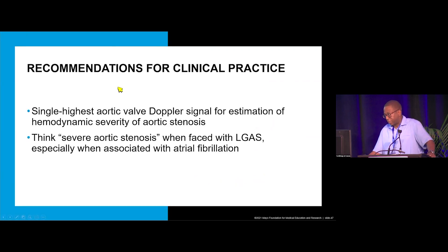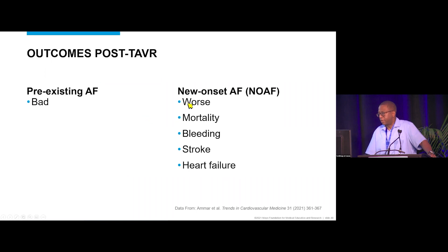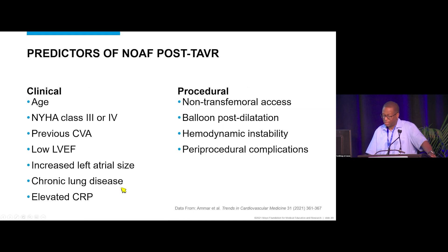Recommendations for clinical practice: take the single highest aortic valve Doppler signal for estimation of hemodynamic severity of aortic stenosis, and think severe AS when faced with low-gradient aortic stenosis especially associated with atrial fibrillation. For patients with new-onset atrial fibrillation following TAVR, outcomes are even worse — higher mortality, higher bleeding rates, higher stroke rates, and higher heart failure rates.